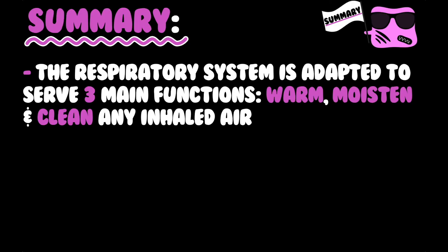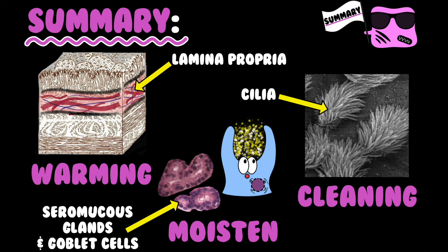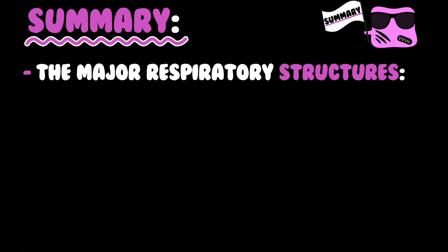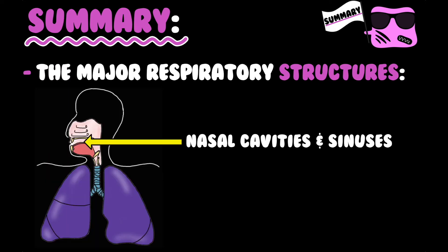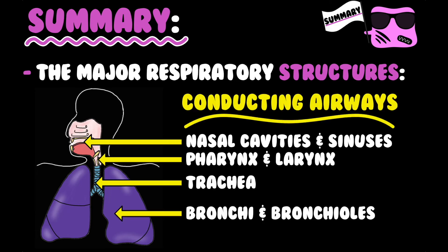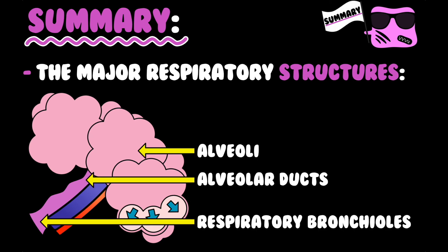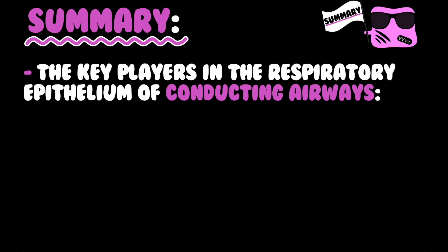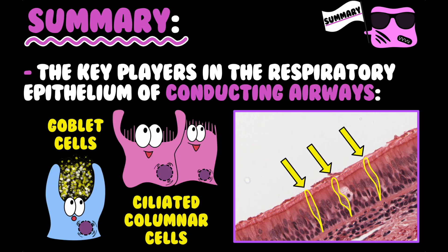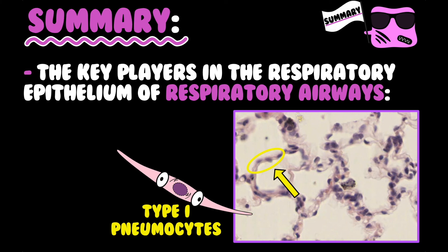In summary, the respiratory system is adapted to serve three main functions: warm, moisten, and clean inhaled air. Warming is done via the lamina propria, moistening via the seromucous glands and goblet cells, and cleaning via the cilia. The major respiratory structures of the conducting airways include the nasal cavities and sinuses, pharynx, larynx, trachea, bronchi, and bronchioles. The respiratory airways include the respiratory bronchioles, alveolar ducts, and alveoli. Key cells in the conducting airway epithelium are goblet cells and ciliated columnar cells, while key cells in the respiratory airway epithelium are type 1 and type 2 pneumocytes.